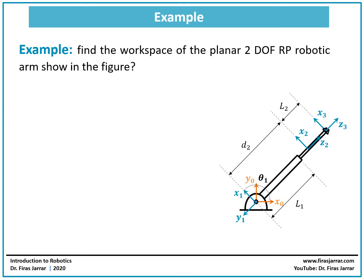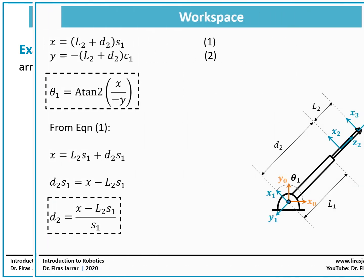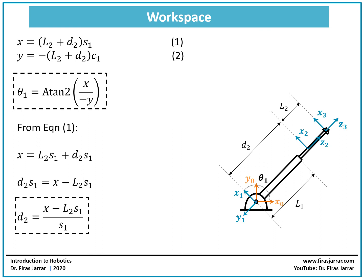This is a revolute-prismatic robotic arm, still a planar two degrees of freedom arm. It has a revolute joint represented by theta 1 and a prismatic joint represented by the joint variable d2. We are asked to find the workspace for this robotic arm. Recalling a previous lecture on inverse kinematics for this configuration, we obtained a relationship between x, y, and theta 1, from which we derived the values for theta 1 and d2.